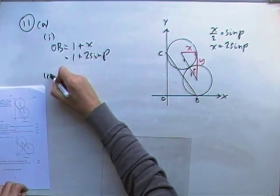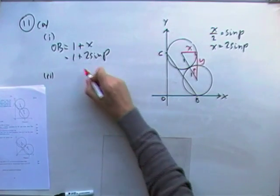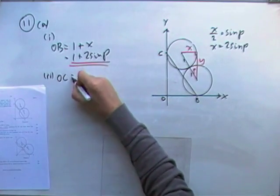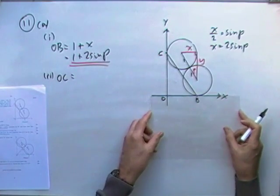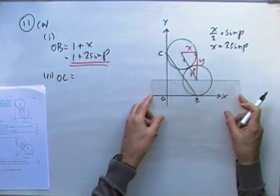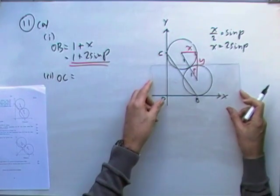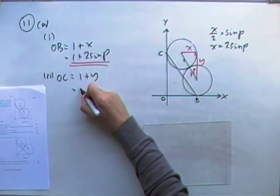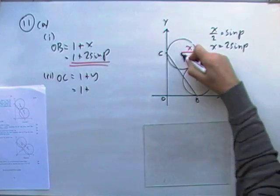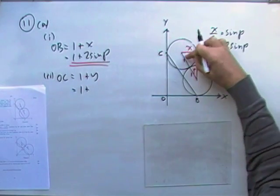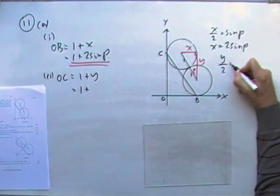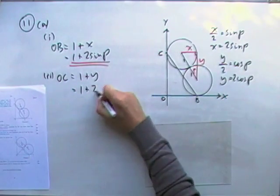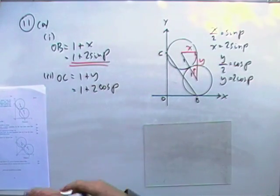For the second bit, it says write down a similar expression for OC. Well, for OC, to reach OC I would go up to the centre of that, which is 1 unit. The radius is 1. And then it helps to travel up that distance Y in that triangle. So OC is going to be 1 plus Y. Y over 2, because that line is the radius plus the radius, unit radius 2. Y over 2 and for the cosine of the angle P. So Y is going to be 2 cos P. So 2 cos P. So that's that part.